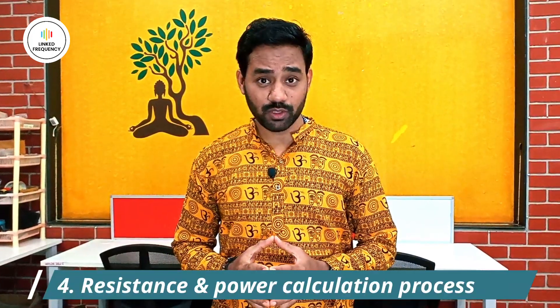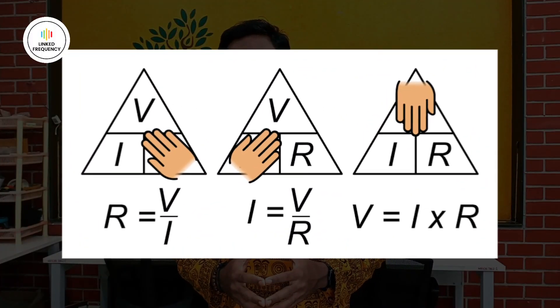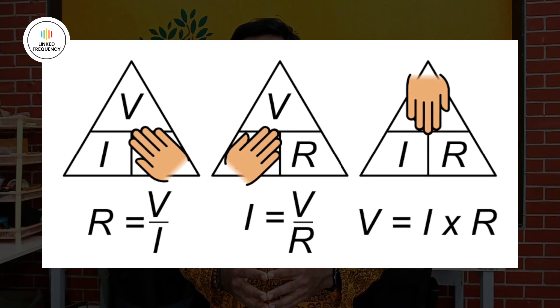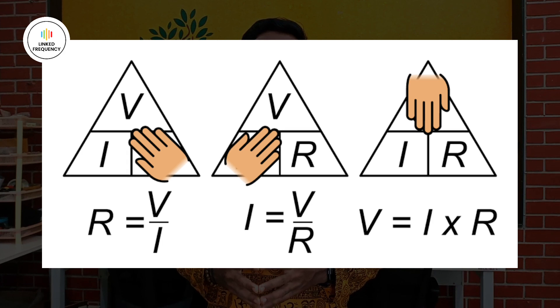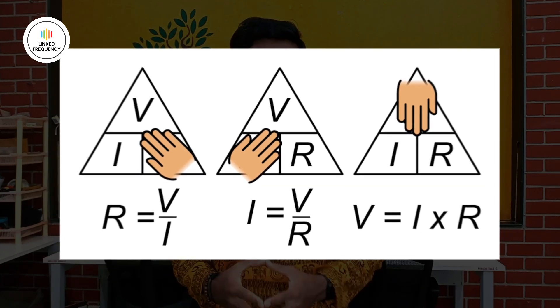How to calculate a resistance value and its power rating — this is one of the most basic calculations in electronics. For basics, calculating a resistance value is straightforward. But for wireless communication systems dealing with impedance, it becomes very complex. For a simple case like adding a resistor for an LED, using Ohm's law it is straightforward: R equals V divided by I, where V is the source voltage or potential difference across the two points, and I is the amount of current you want to allow through that resistor.